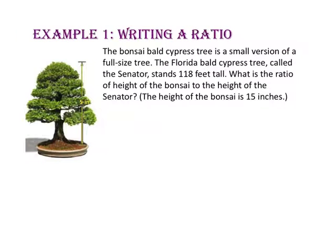In example one, we will write a ratio. The bonsai bald cypress tree is a small version of the full size tree. The Florida bald cypress tree, called the Senator, stands 118 feet tall. What is the ratio of the height of the bonsai to the height of the Senator? The height of the bonsai is 15 inches. Since the question asks us to write the ratio of the height of the bonsai to the height of the Senator, we are going to write the bonsai's height first and the Senator's height second.